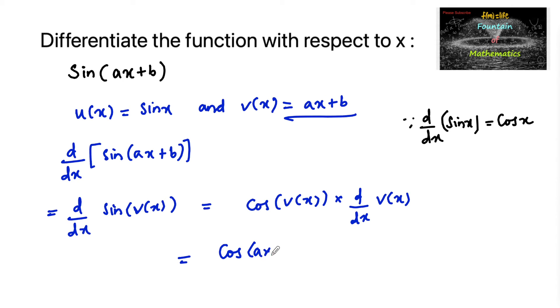So we can write cos of ax plus b times d/dx of ax plus b, where a and b are constants.